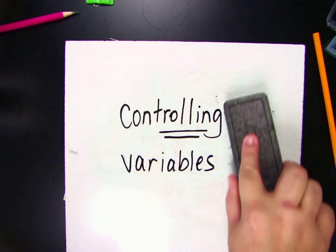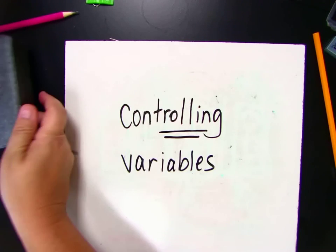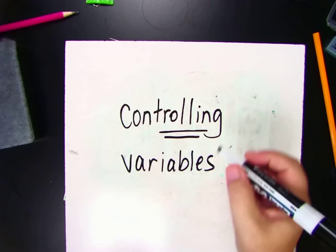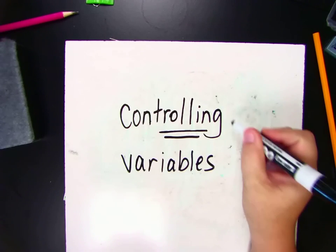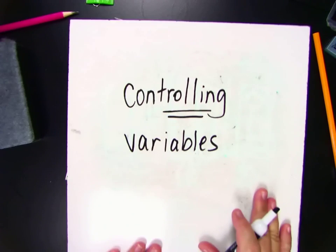And scientists like to control variables too. And the reason they like to control variables is they like to know that everything is fair. Everybody has a fair chance.